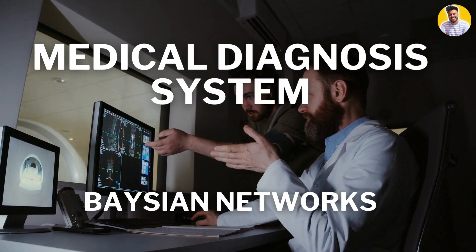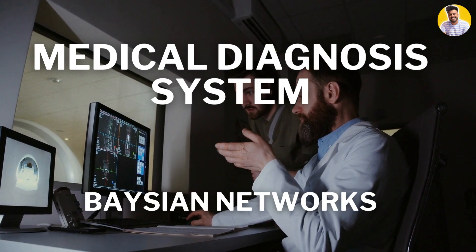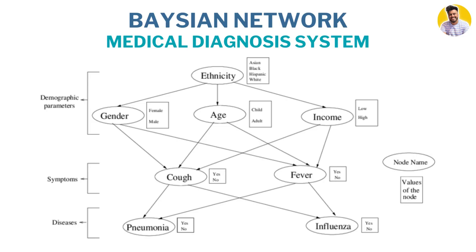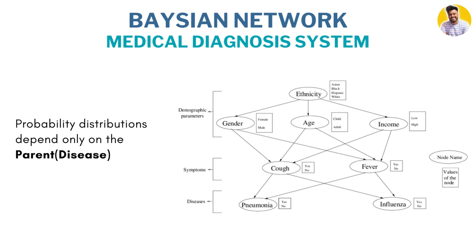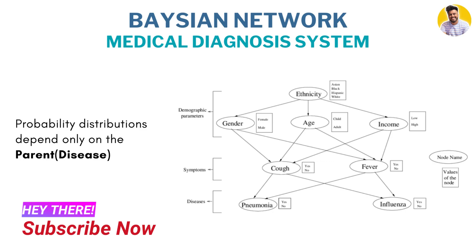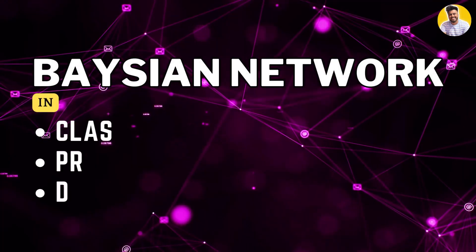Let's take a quick example to explain Bayesian networks in medical diagnosis systems. A Bayesian network would represent the relationship between symptoms, diseases, and test results. For example, if a patient has a cough and fever, the network would predict the probability of different diseases causing those symptoms. The parameters quantify the relationship between symptoms and disease. Each variable is assumed to be conditionally independent of its non-descendants given its parents, meaning the probability distribution depends only on the values of its parents.